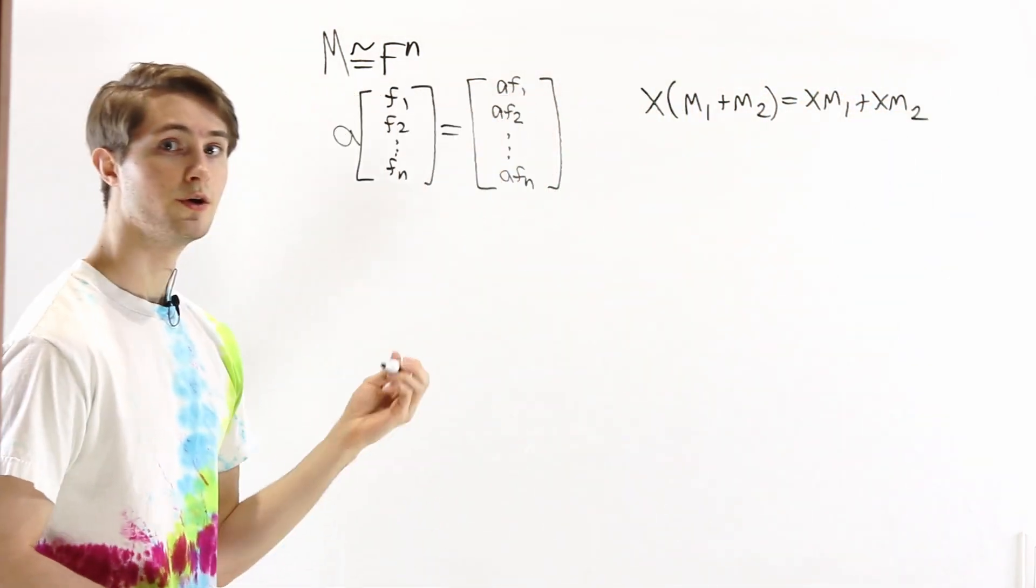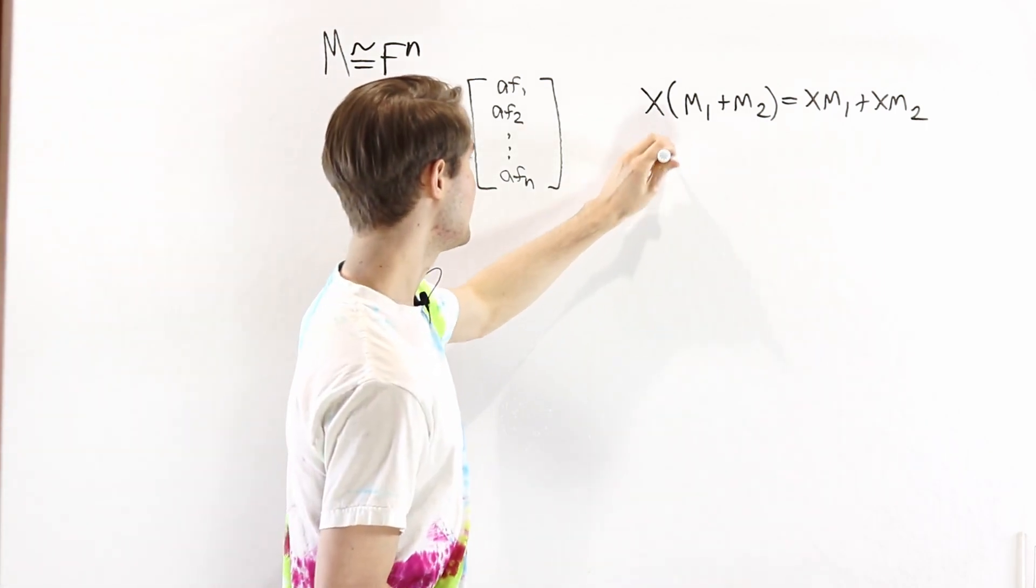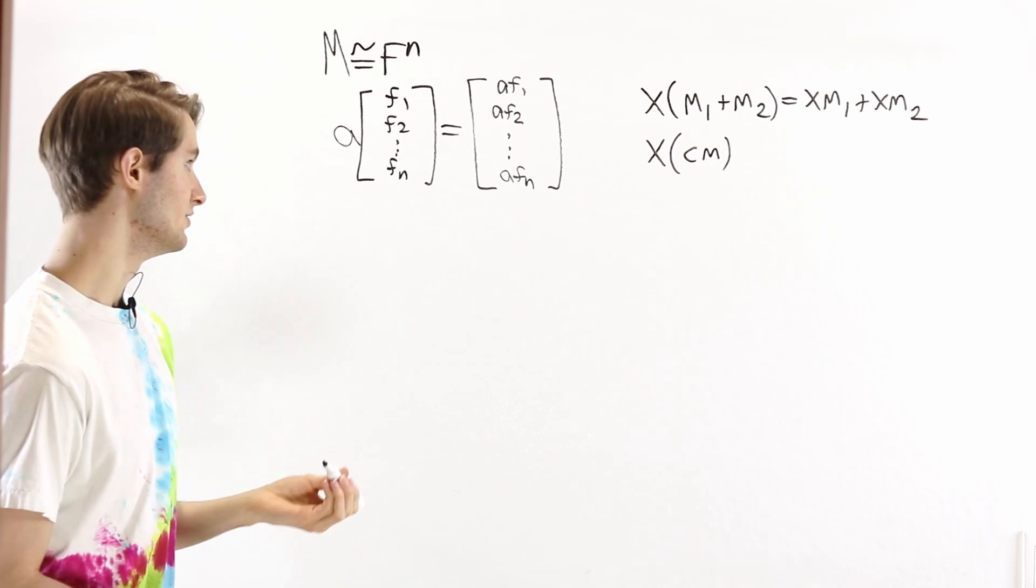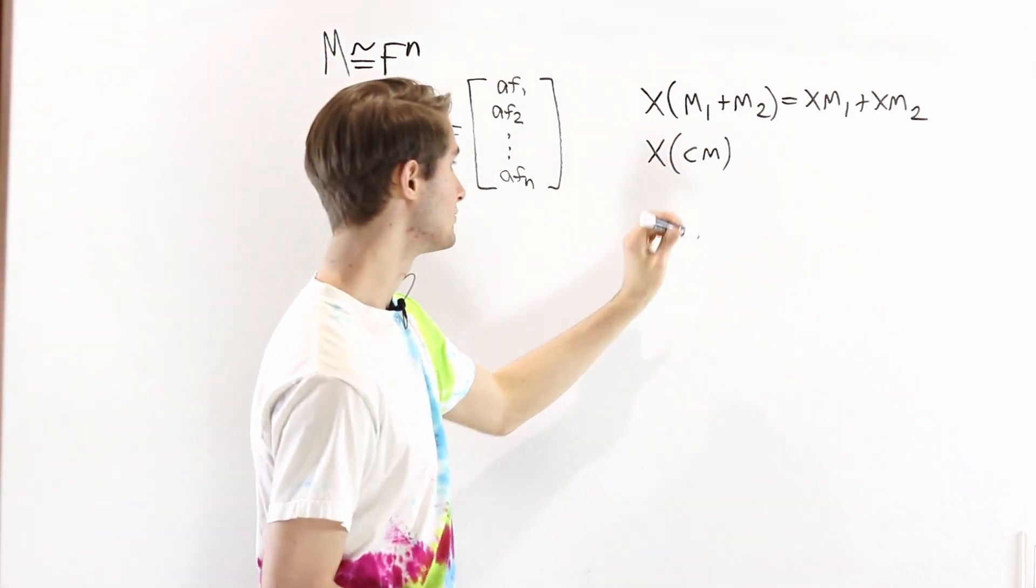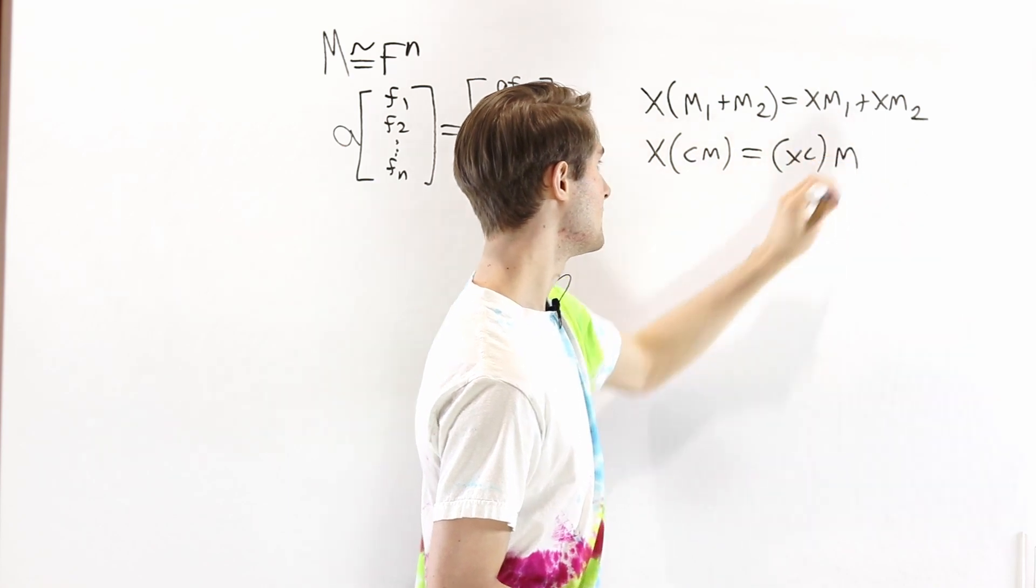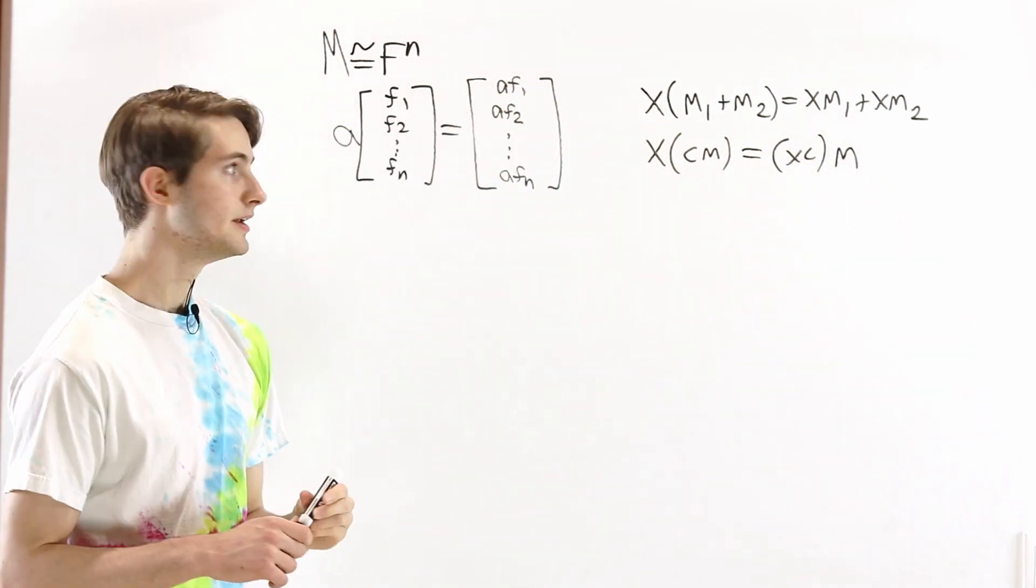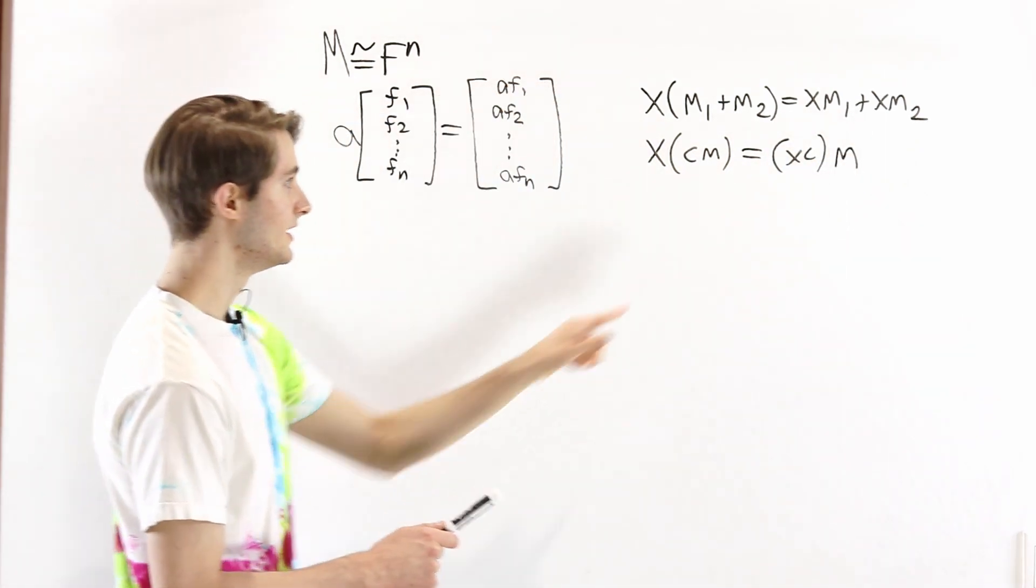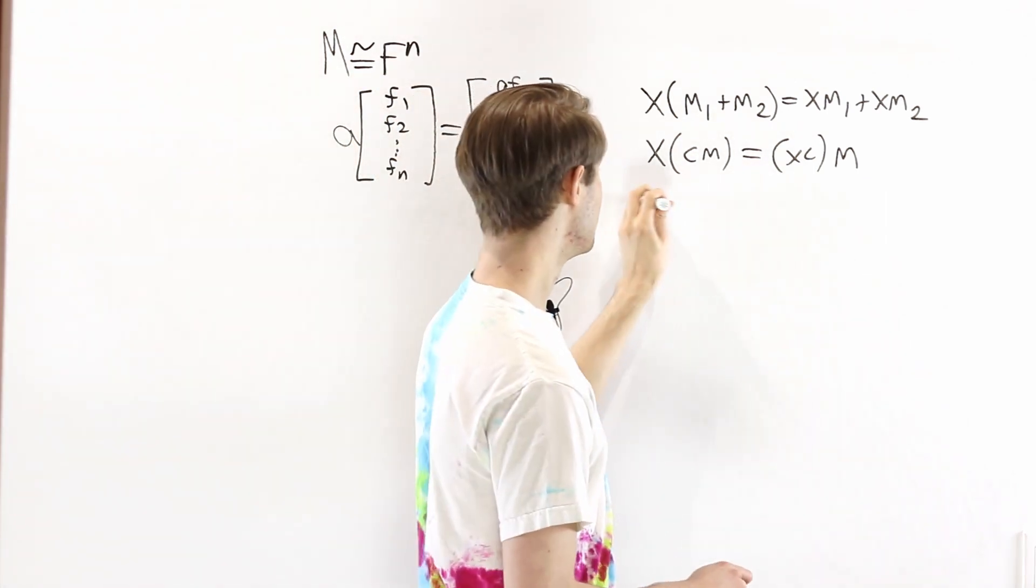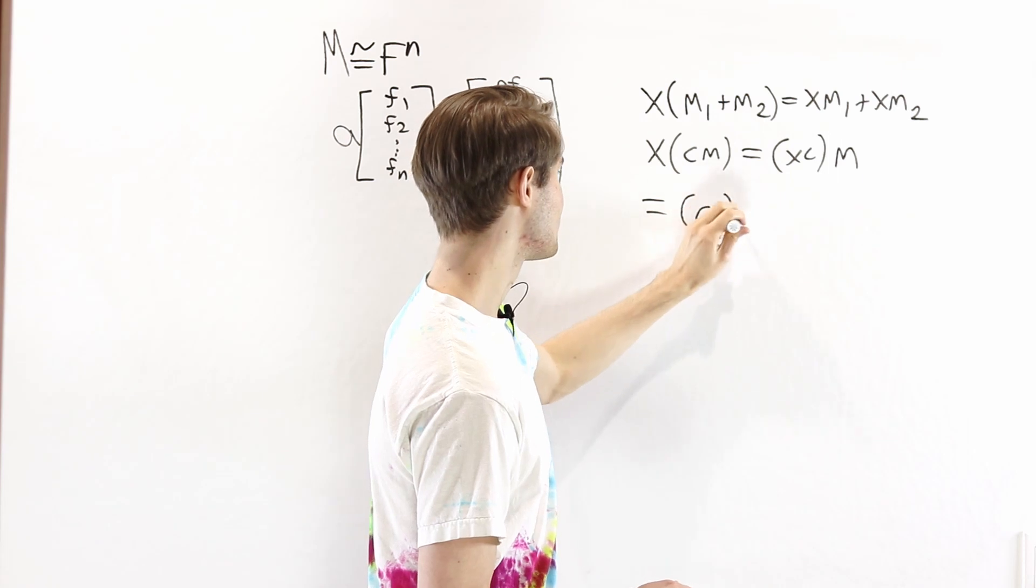And we also know that x times cm, where c is some element in the field, this is going to be associative. So this is equal to xc times m. But we know that in the polynomial ring, x and c commute. So we can flip these around.